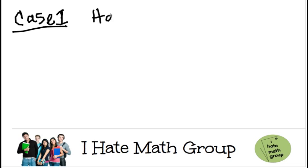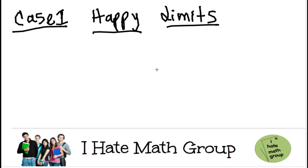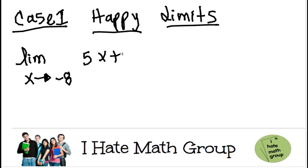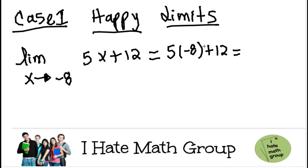So first I'm going to call case one the happy limits. These limits are actually the easiest ones to do. For example, the limit when x is approaching negative 8 and then they give you the function 5x plus 12.